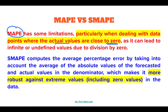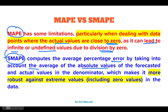MAPE can lead to infinity or undefined values due to division by zero. If points are very close to zero, the difference might be zero and the result could be infinite or undefined. On the other hand, SMAPE computes the average percentage error by taking into account the average of the absolute values of both the forecasted and actual values in the denominator. This makes SMAPE more robust against extreme values, including zero values in the data.